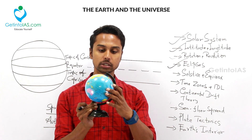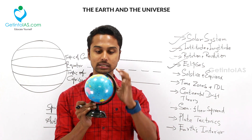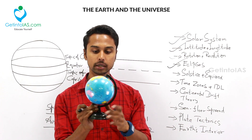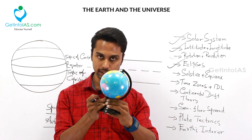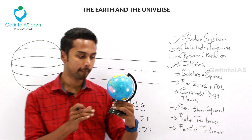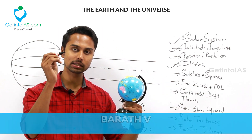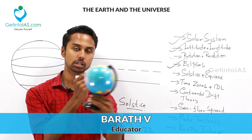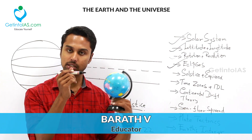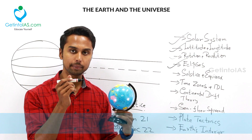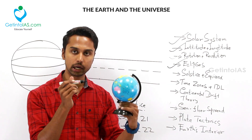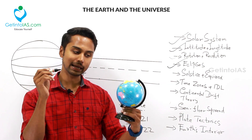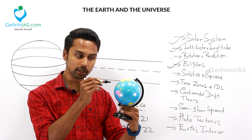The axis of the earth is tilted 23 and a half degrees. It is not straight — the earth is tilted somewhat. Imagine this as the sun and sun's rays. This is the earth which is revolving around the sun. In a particular orbit, the sun's rays fall directly on the equator.